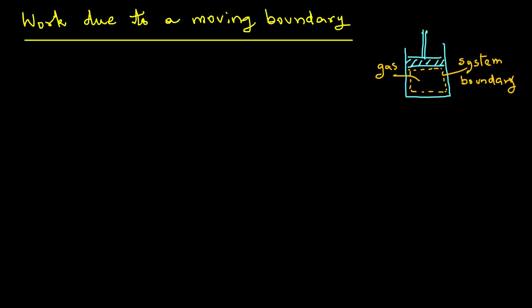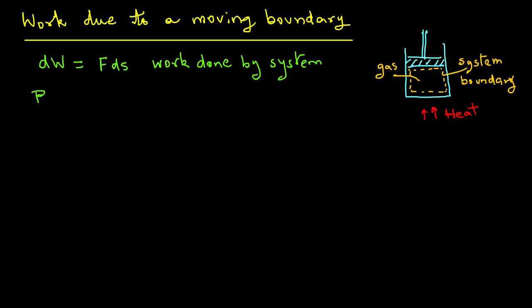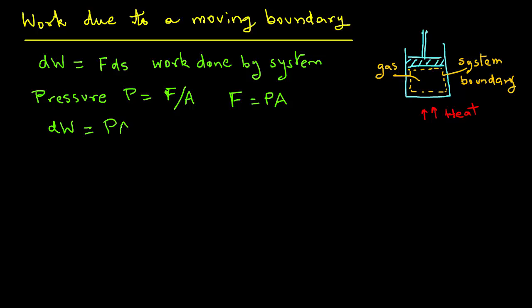Let's say that we heat this gas. As we know, when you heat a gas it expands, and so the gas will expand and move the piston. The work done by the system is dW equals F times ds. Note also that pressure equals force per unit area, so P equals F divided by A, or force equals pressure times area, PA.